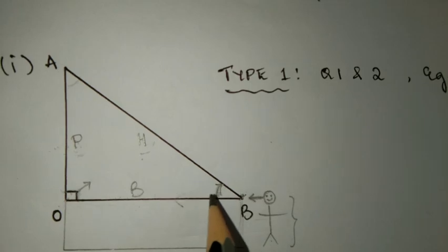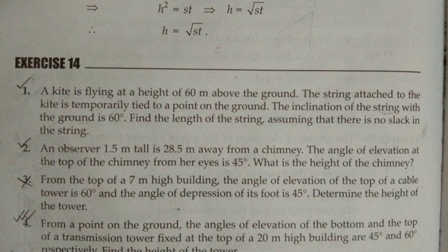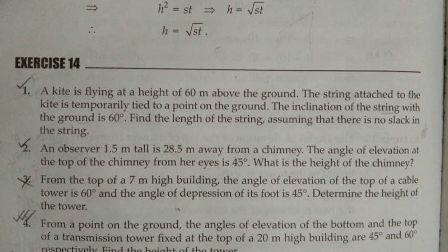We are going to use sine and tan theta. Now let me go into detail. Let's take a look at question number one. It says: a kite is flying at a height of 60 meters above the ground. The string attached to the kite is temporarily tied to a point on the ground. The inclination of the string with the ground is 60 degrees. Find the length of the string, assuming that there is no slack in the string — it's completely straight.